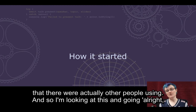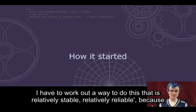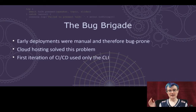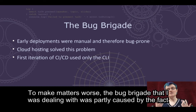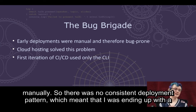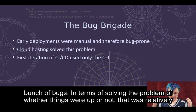Looking at this, I had to work out a way to do this that was relatively stable and reliable, because at the time I had a Raspberry Pi and a terrible internet connection — thank you, Australia. The bug brigade I was dealing with was partly caused by the fact that the early deployments to that essentially Raspberry Pi-like setup were all being done manually, so there was no consistent deployment pattern, which meant I was ending up with a bunch of bugs.